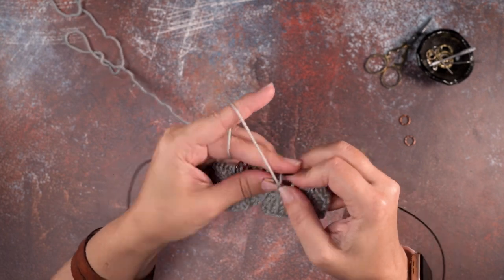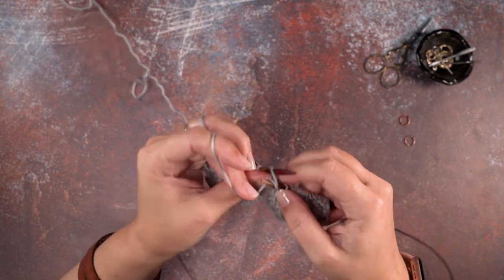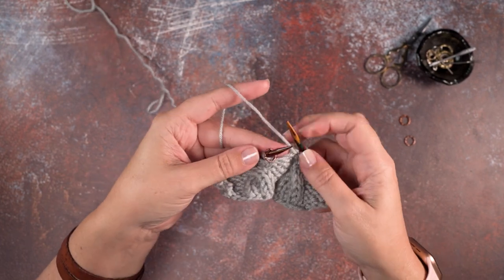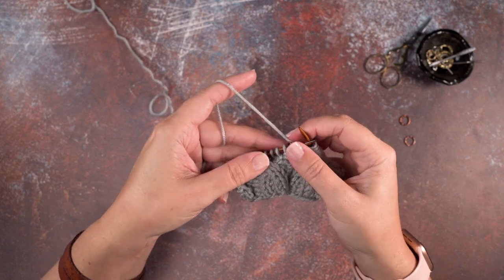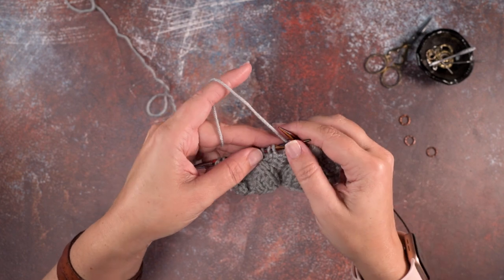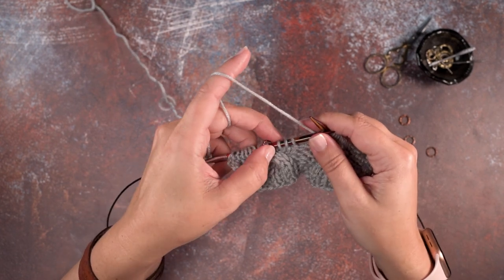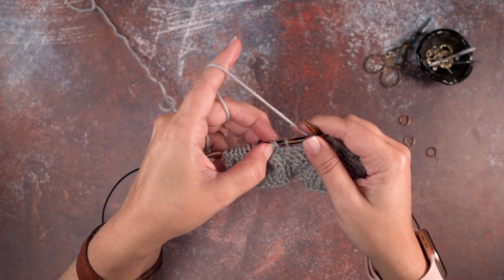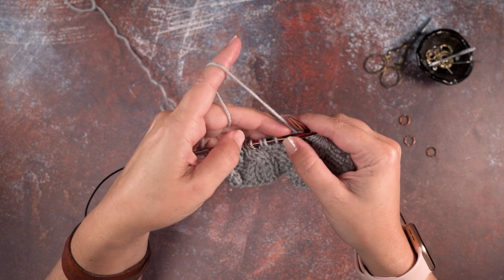I'm going to just work in pattern over to my second set of stitch markers. There's our second set, there's our three stitches that we're going to be cabling. Remove that first marker and again we're going to be crossing the last two stitches over the right side of that purl stitch.